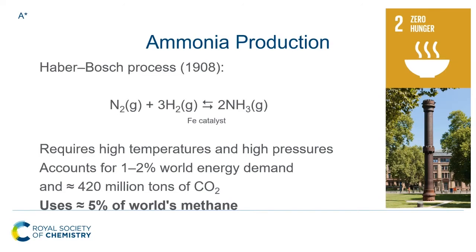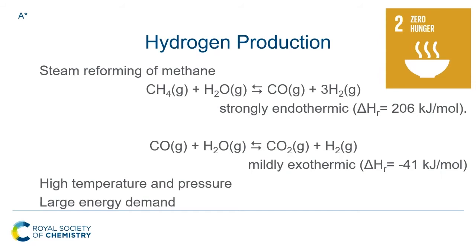When you look at the equation — nitrogen and hydrogen becoming ammonia — there's no methane in there, so why does it use so much of the world's methane? The reason is that hydrogen is produced by steam reforming of methane. You heat methane under pressure with steam, giving carbon monoxide and hydrogen. The carbon monoxide can then react with more steam to give carbon dioxide and more hydrogen. This requires high temperature and pressure and has a very large energy demand, because the first reaction is strongly endothermic whilst the second is only mildly exothermic. We really do need to put energy into this system to generate the hydrogen.